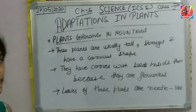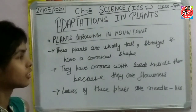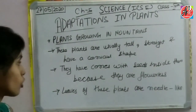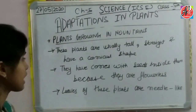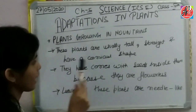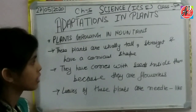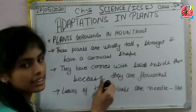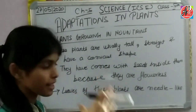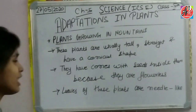Now let's see the plants growing in the mountains. The features of mountain plants are: first, these plants are usually tall, straight, and have a conical shape. The plants growing in mountain forests have several distinct features. Why are these plants tall, straight, and conical in shape?